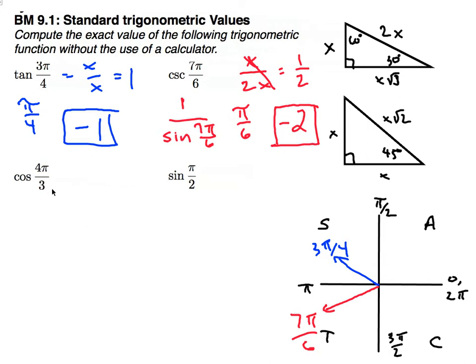The cosine of 4π over 3. Reference angle, π over 3. And that is a 60 degree, and I'm looking at cosine, which is the adjacent and the hypotenuse. So I go to my 60 degree. Adjacent is x, and hypotenuse is 2x. Simplifies to 1 half.